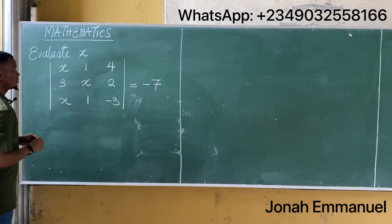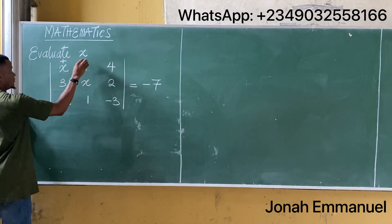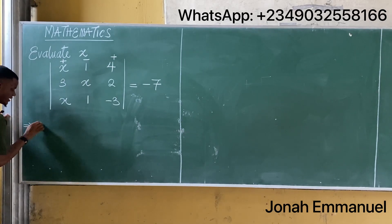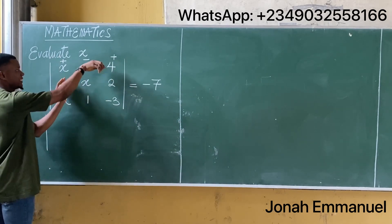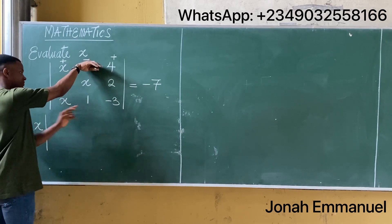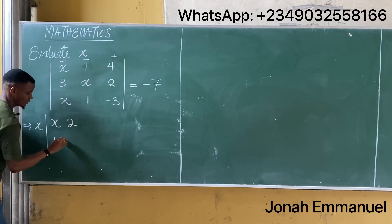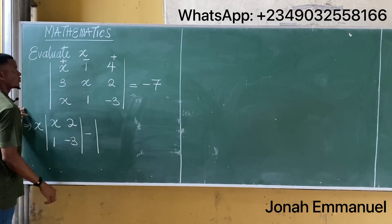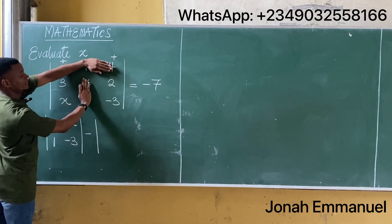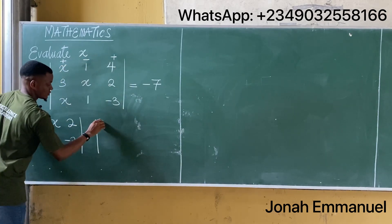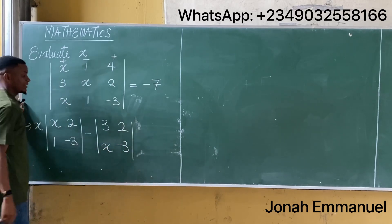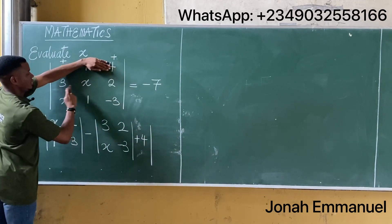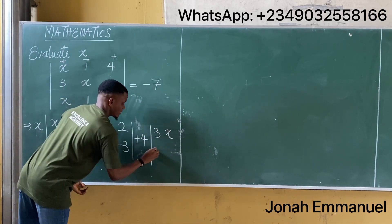We know that this means determinant, and we know to get the determinant our first task is to apply plus, minus, plus. So it becomes plus x — x multiplied by covering the row and column of x. I'm left with x, 2, 1, minus 3. Next up minus 1: cover the row and the column, giving 3, 2, x, minus 3. And then finally plus 4: cover the row and the column, giving 3, x, x, 1.